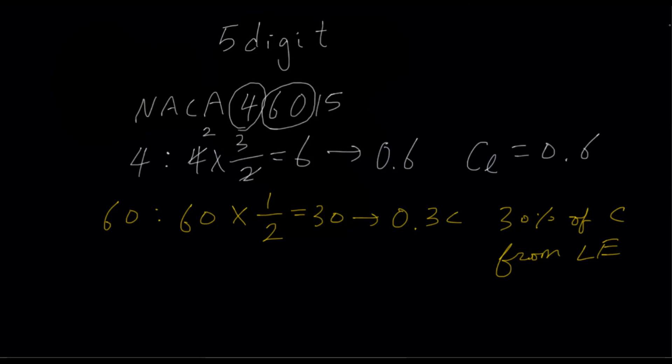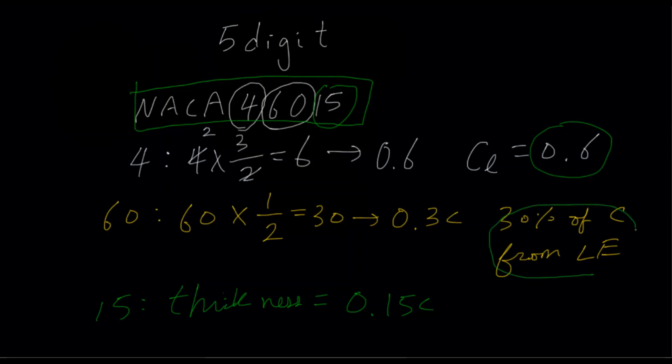What about the last two numbers? Well, it is quite similar to the 4-digit number. And if you said the thickness, then you'll be right. So 15 represents the thickness. And luckily, we don't have to multiply this by a factor. It's just 0.15C. So as we can see, our NACA 46015 airfoil. Now our design lift coefficient is 0.6. Our location of the maximum camber is 30% of the chord from the leading edge. And our thickness is 0.15C, aka 15% of the chord length.